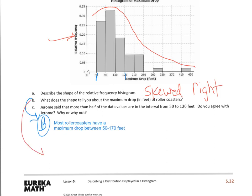What I'll do now is I'm going to bring over C, because that's my next question. Jerome said that more than half of the data values are in the interval from 50 to 130. So 50 to 130. Do you agree with Jerome? Why or why not?